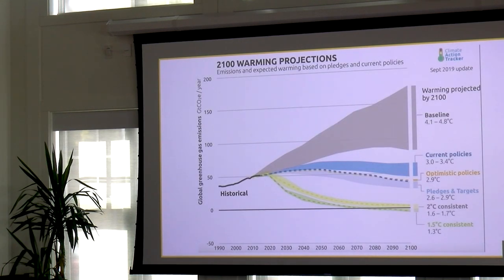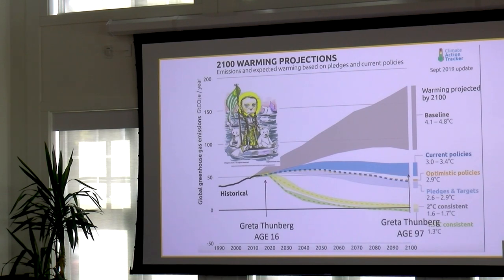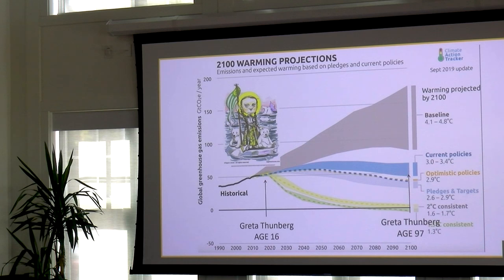Most of you have heard of Greta Thunberg, and these kinds of projections always end at 2100 — have you ever noticed that? The world will keep warming beyond 2100. But by 2100, Greta Thunberg will be almost 100 years old. Just think about in the lifetime of one person how fast these changes are going to happen and the choices we have to make.